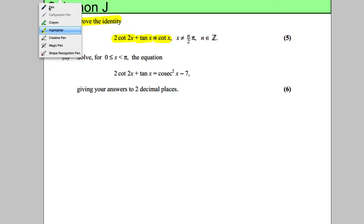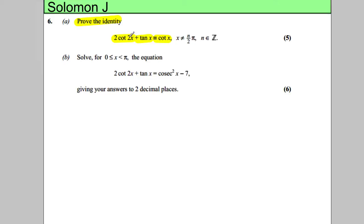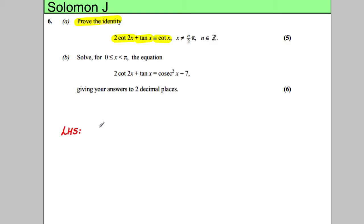When I look at that, always with these identities, you start off on one side and show it equals the other. There's nothing much going on the right-hand side, so I'm not going to start there. Let's start on the left-hand side. I'm actually going to show you this two ways — one in red and one in blue — just to show you there are loads of ways to do these types of questions. So I'm starting with 2cot(2x) plus tan(x).